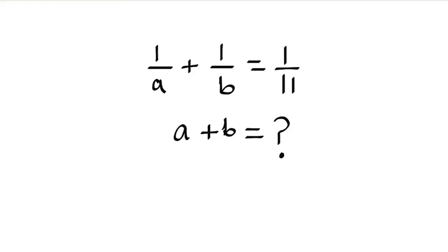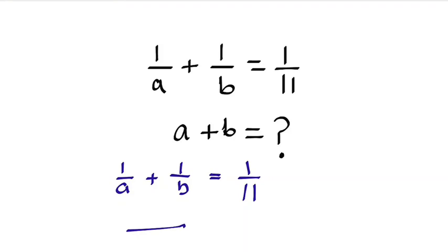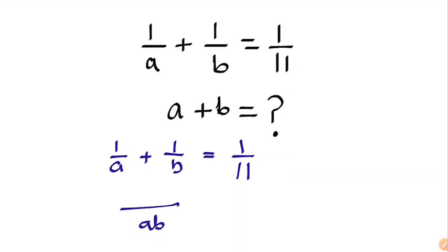Alright, so this is what we are going to do. We have 1 over a plus 1 over b equals 1 over 11. Let's find the LCM from the left-hand side. The LCM is going to be a·b. So a·b divided by a gives us b, plus a·b divided by b gives us a, and that equals 1 over 11.